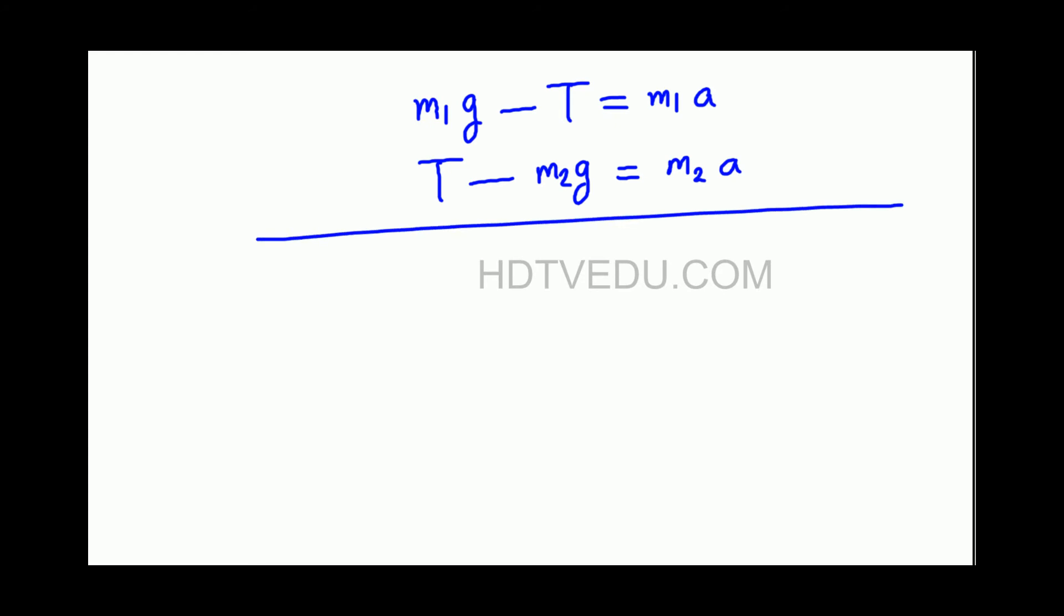So now, you add and you get M1G minus T plus T minus M2G equals M1A plus M2A. So this is M1G minus M2G plus T and minus T cancels out, equals M1A plus M2A. G is common, so G times M1 minus M2 equals A is common on the right side, so A times M1 plus M2.